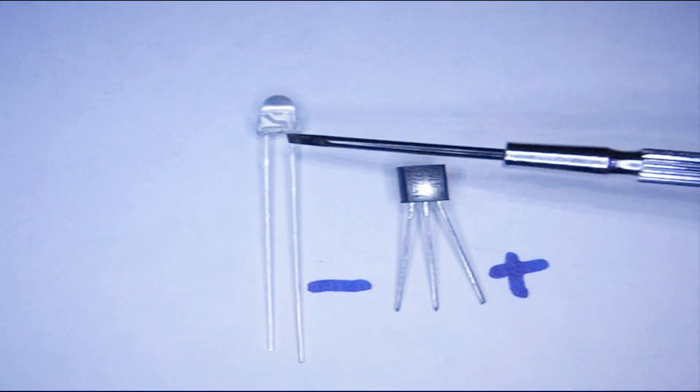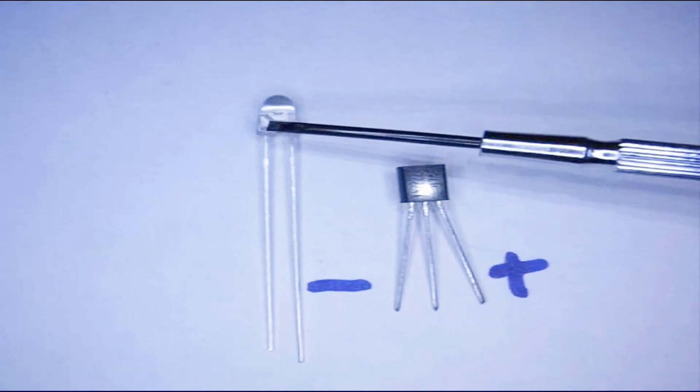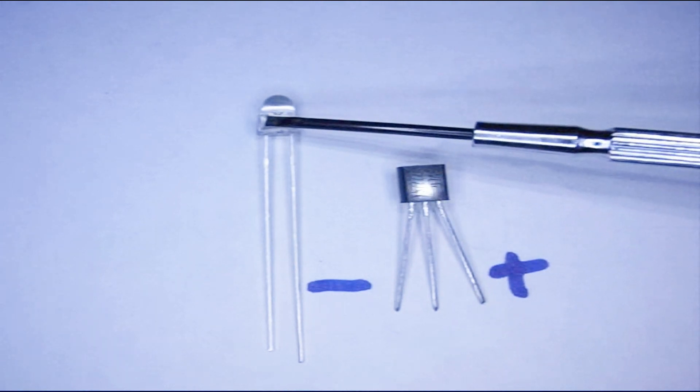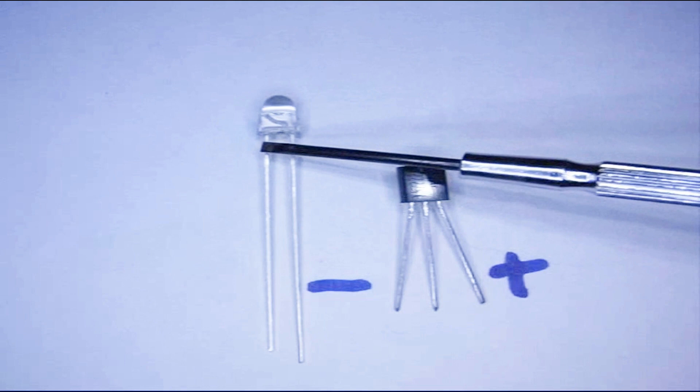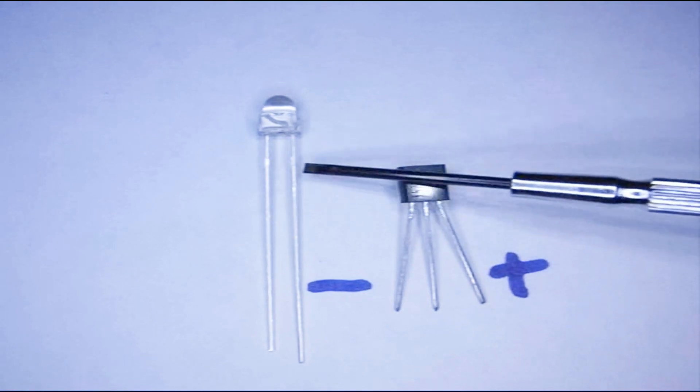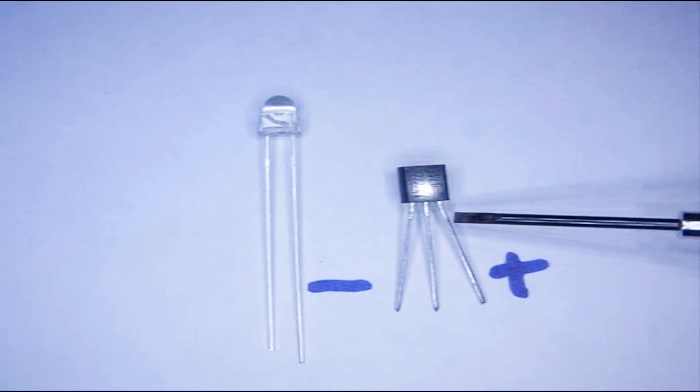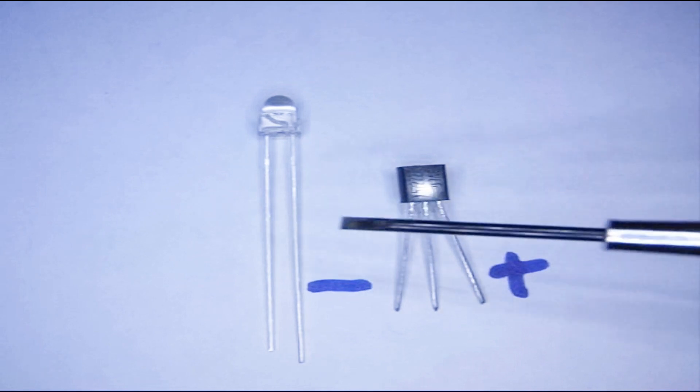The first step is to solder the LED to the transistor and make sure you get the negative lead over here attached to this negative lead and then this positive lead to this positive lead. I'll go do that.